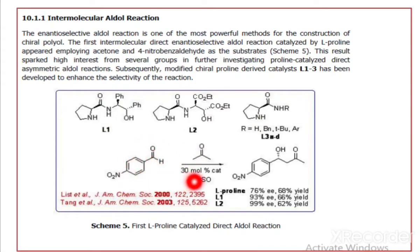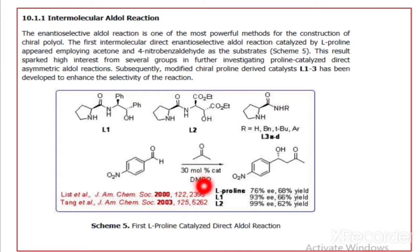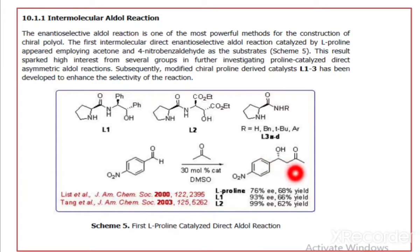In a simple example: 4-nitrobenzaldehyde on treatment with acetone in the presence of 30 mol% catalyst in DMSO. The ketone is converted into the enol form, which attacks the aldehyde carbonyl, giving an OH group, and we get the beta-hydroxy ketone. This illustrates the intermolecular aldol reaction — intermolecular meaning between two different molecules (one aldehyde and one ketone), as opposed to intramolecular which occurs within the same molecule.